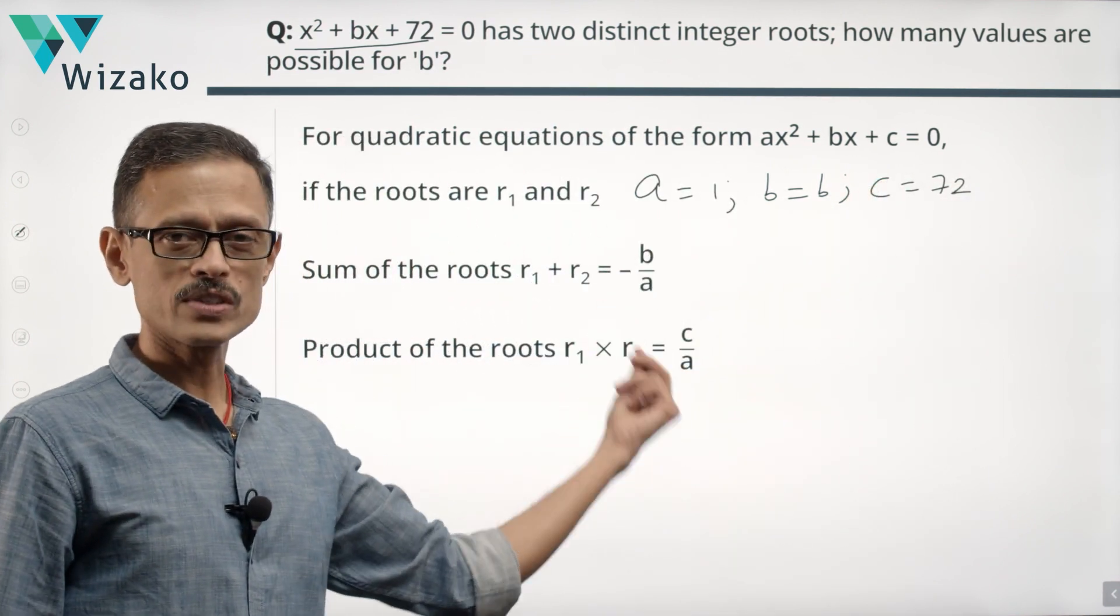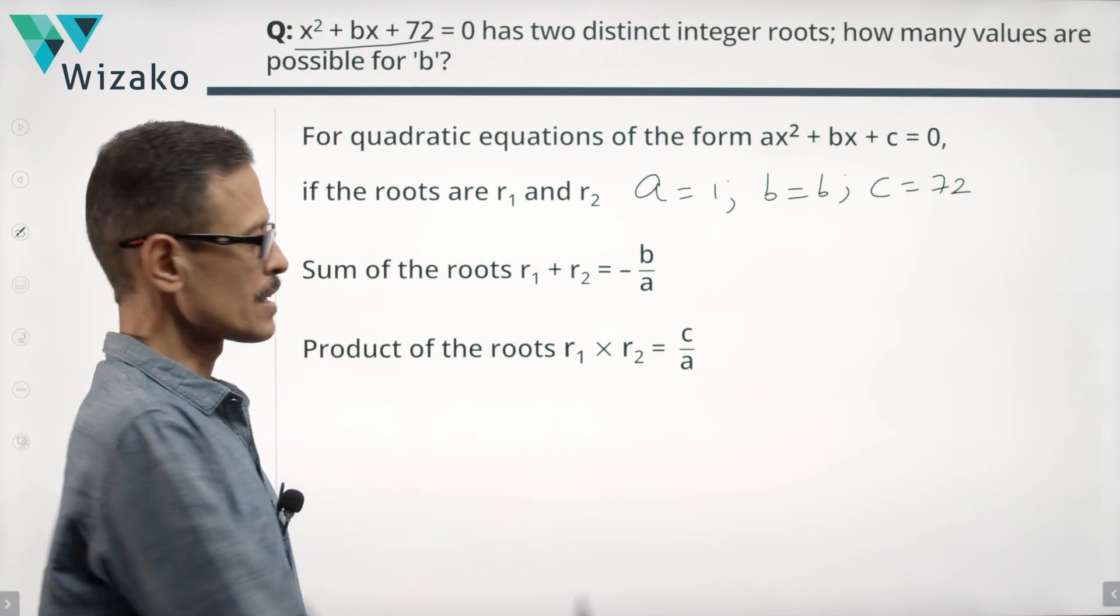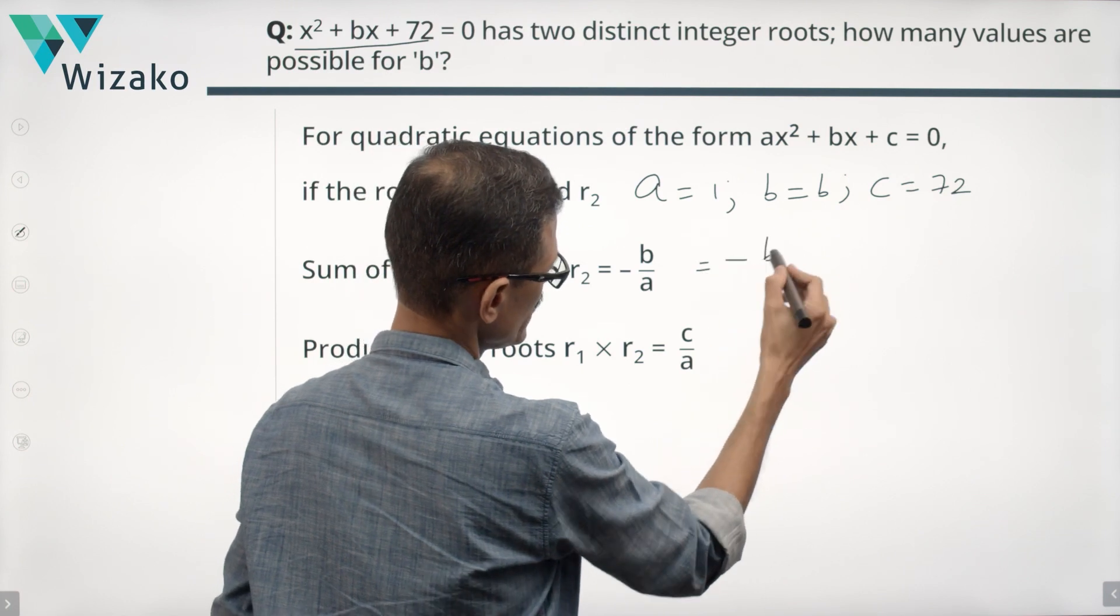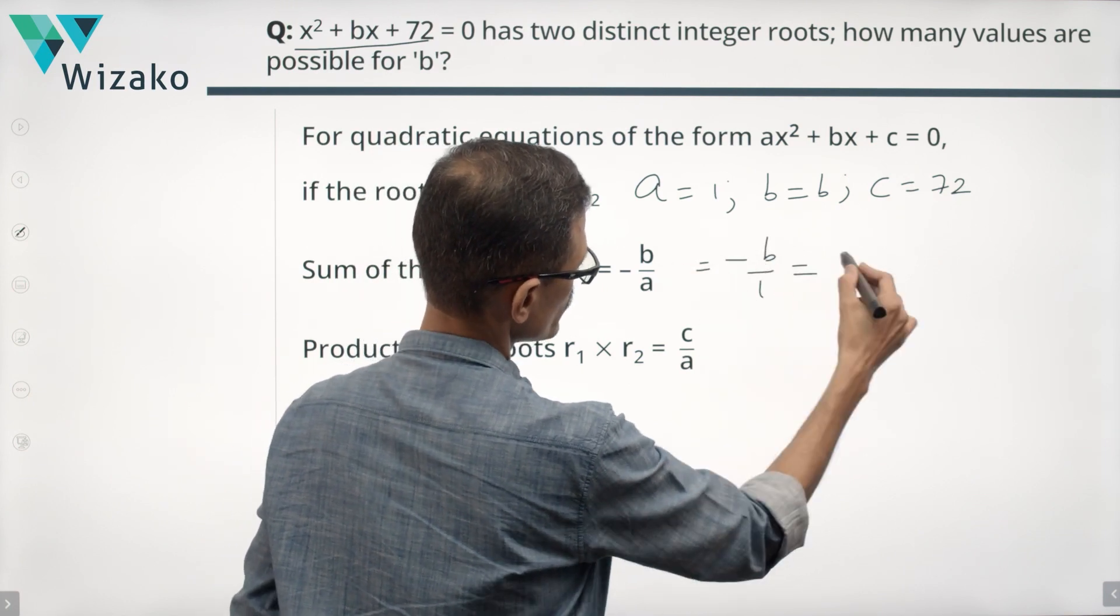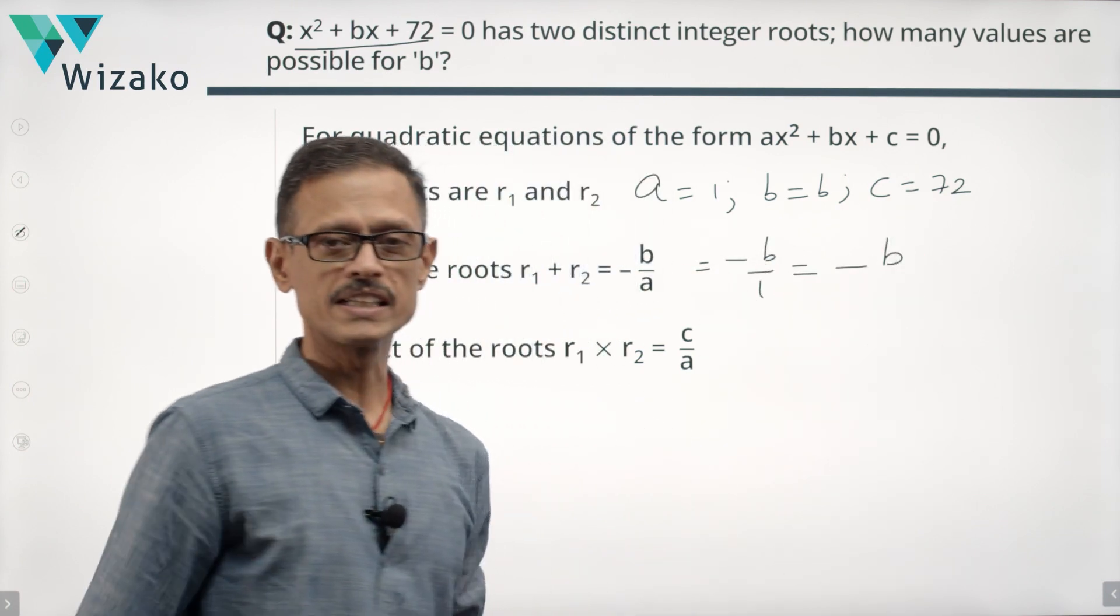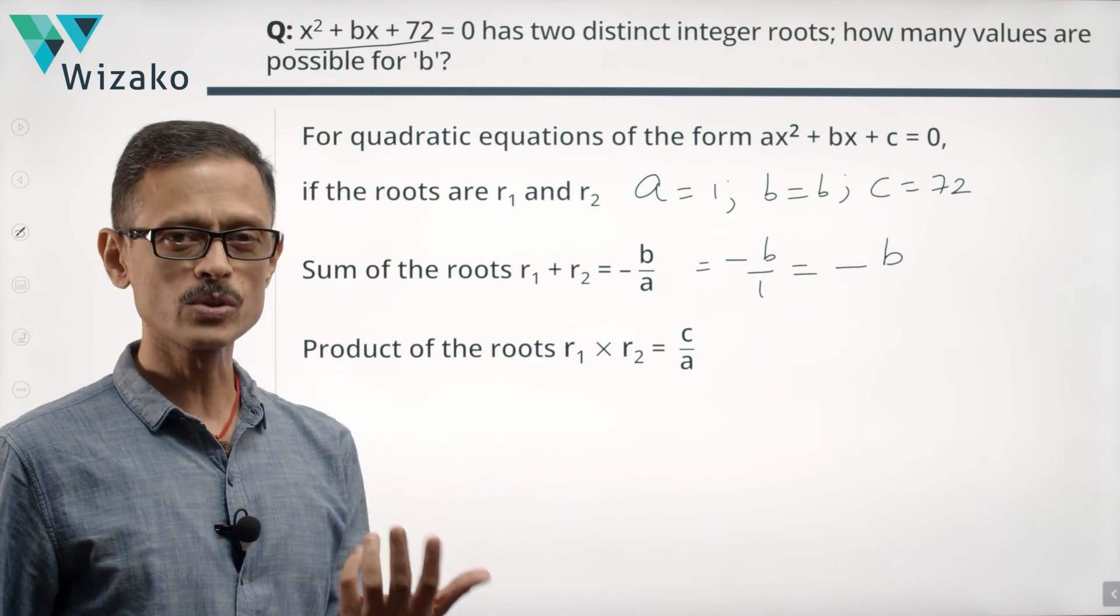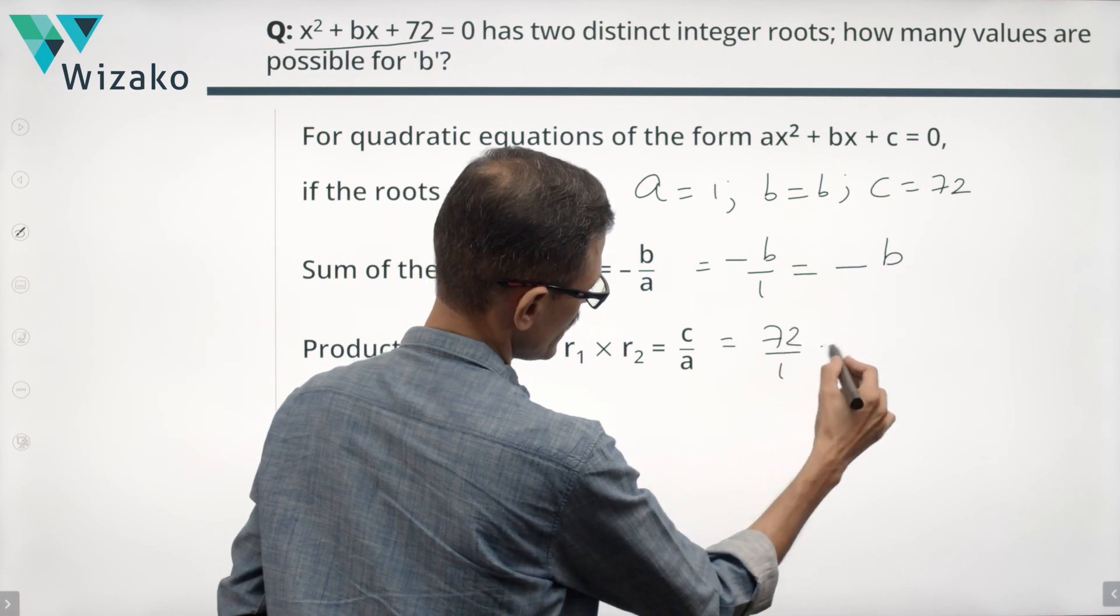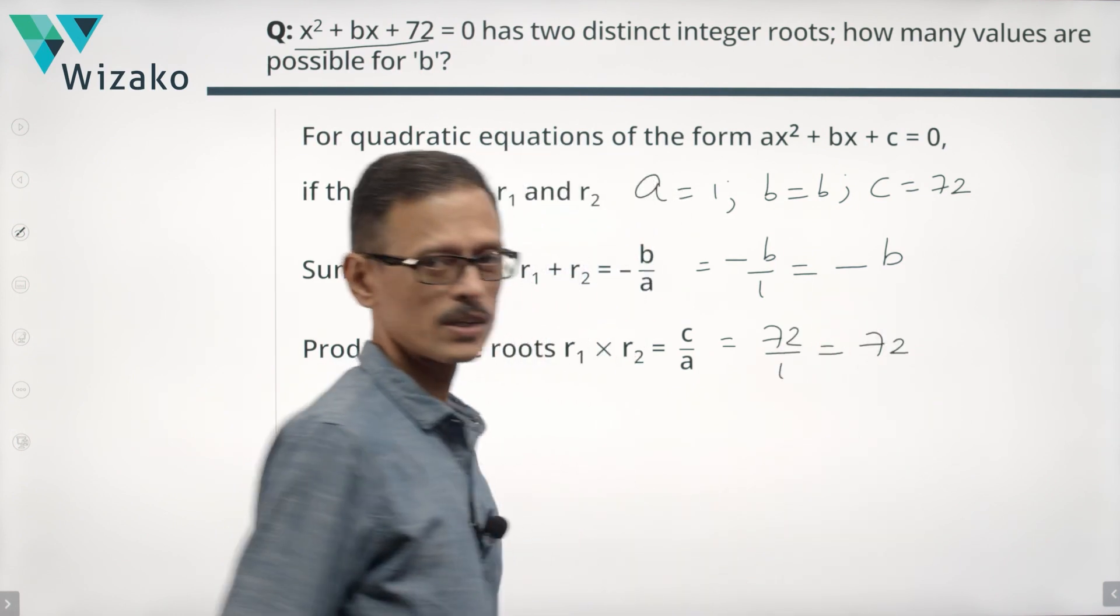Let's just plug in these values into these two equations. Sum of the roots R1 plus R2 is minus B upon A, B is a B, so this is going to be minus B, A is a 1, so sum of roots is equal to minus B for the given equation. Product of the roots is R1 times R2, which is C upon A, C in our case is 72, A is 1, so R1 times R2 is equal to 72.